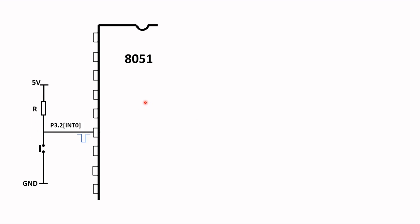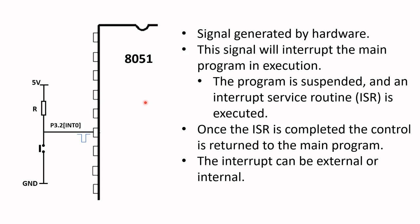This is an external interrupt. An interrupt is a signal that is generated by hardware — in this case, a switch. This signal interrupts the main program that is in execution. The program is suspended and an interrupt service routine, or ISR, is executed. The ISR is equivalent to a subroutine, so once the ISR is completed, control is returned back to the main program. The interrupt can be external, as in this case, or internal.